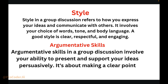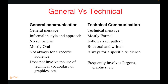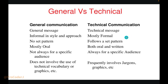Journal versus technical writing: a journal is informal in style and approach, has no set pattern, and does not involve the use of technical vocabulary and graphics. Technical writing, however, is mostly formatted, follows a specific pattern, and is audience-specific. Technical writing frequently involves jargon — specialized terminology — and is well-structured with a clear purpose.